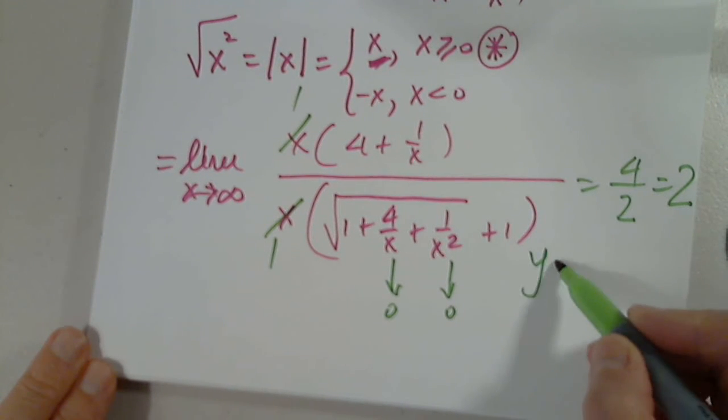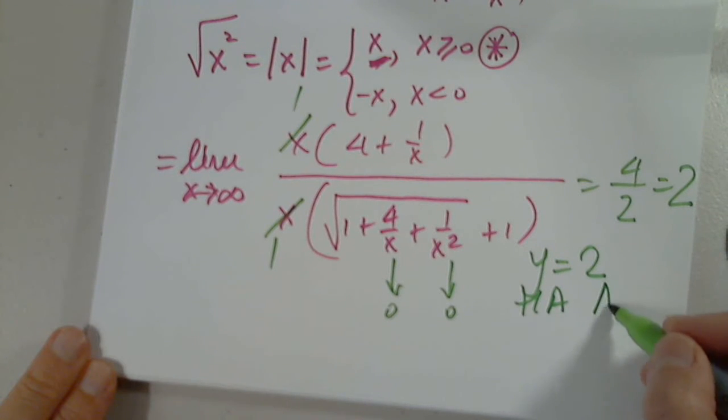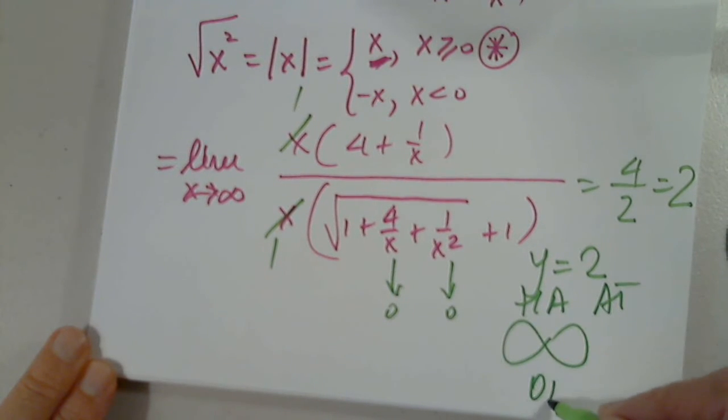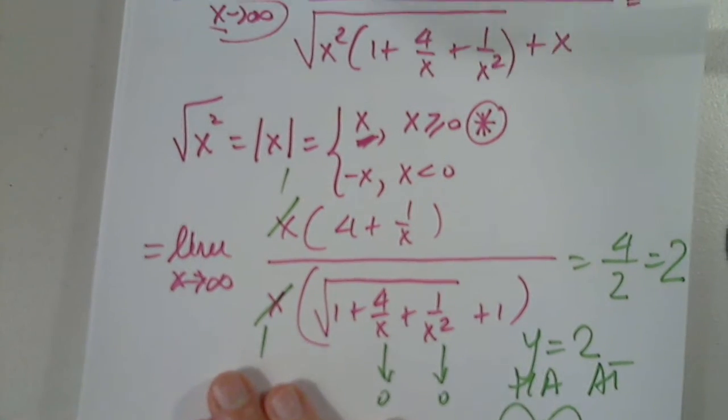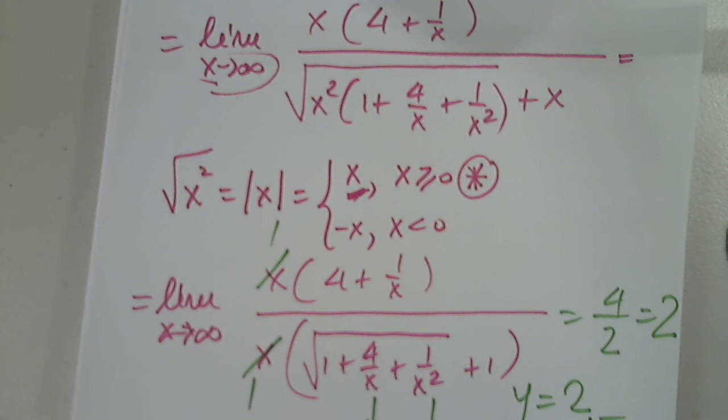I could write now that Y equals 2 horizontal asymptote at infinity only. Guaranteed. Could you go back up a little? Yes. Any questions on this one?